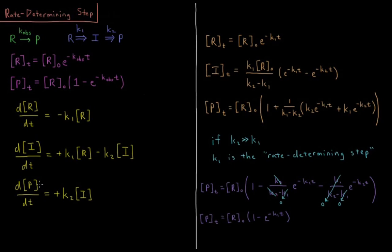So if we try to solve for the integrated rate laws of this situation, what we are going to get is that r of t equals r0 times e to the minus k1t. And we have i of t equals k1 times r0 over k2 minus k1 times e to the minus k1t minus e to the minus k2t.